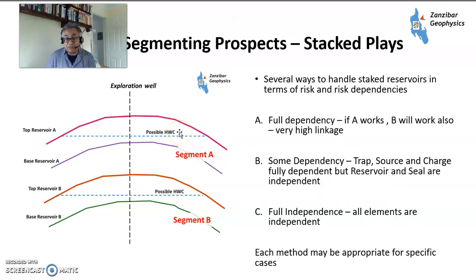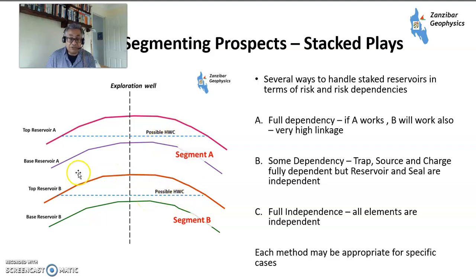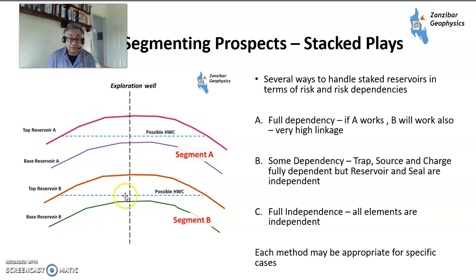You can have several different scenarios. You can have full dependency — if A works, B will work — so there's a very high linkage, same trap, etc. You can also have partial dependency where your trap, source, and charge are fully dependent but your reservoir and seal are independent. For example, if the intermediate seal fails, reservoir B fails but reservoir A still succeeds because the top seal works. Or you could have a situation where the intermediate seal is successful but the top seal is not. Or you can have full independence where everything is fully independent. You need to apply the appropriate method for the specific case, using available information to make the right decision.